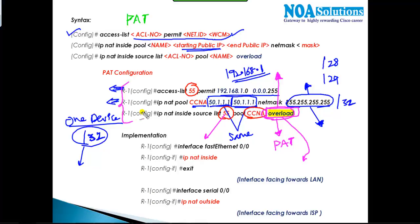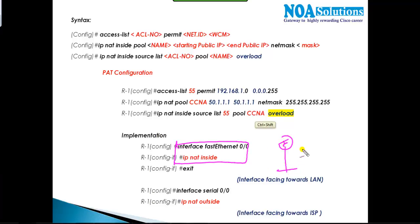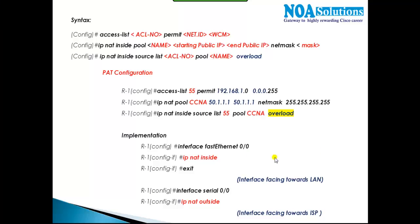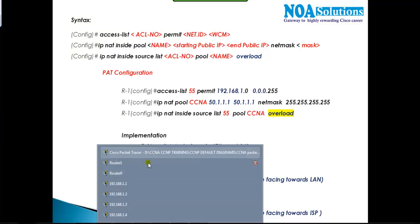The syntax is exactly the same as dynamic NAT. For implementation, the interface facing toward the internal router is always the inside interface, and the interface connecting to the ISP is the outside interface — there is no difference in this regard across the different kinds of NATs.